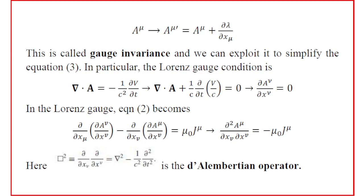Combining all four terms, we can write it as ∂A^ν/∂x^ν = 0, where this is the contravariant component. So ∂A^ν/∂x^ν = 0 is the Lorenz gauge condition.